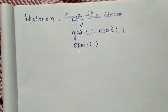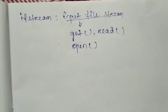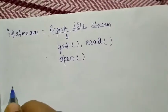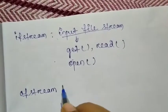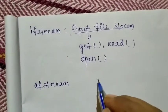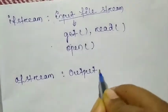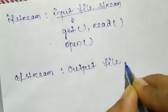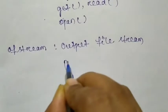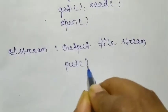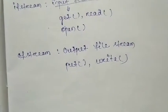We will later discuss open mode, close mode, read mode, and write mode of file operations when we study about different file operations. Then ofstream — it is derived from fstreambase and ostream. This class supports all output functions like put and write.